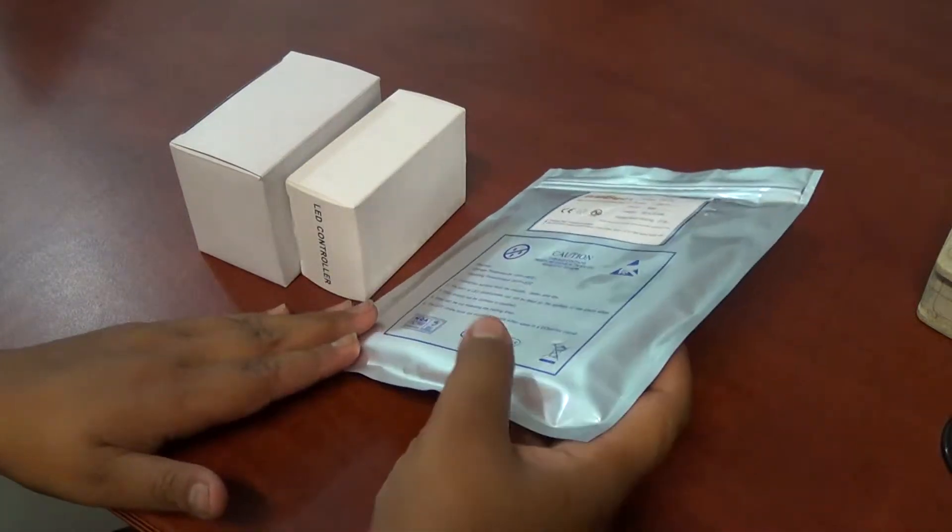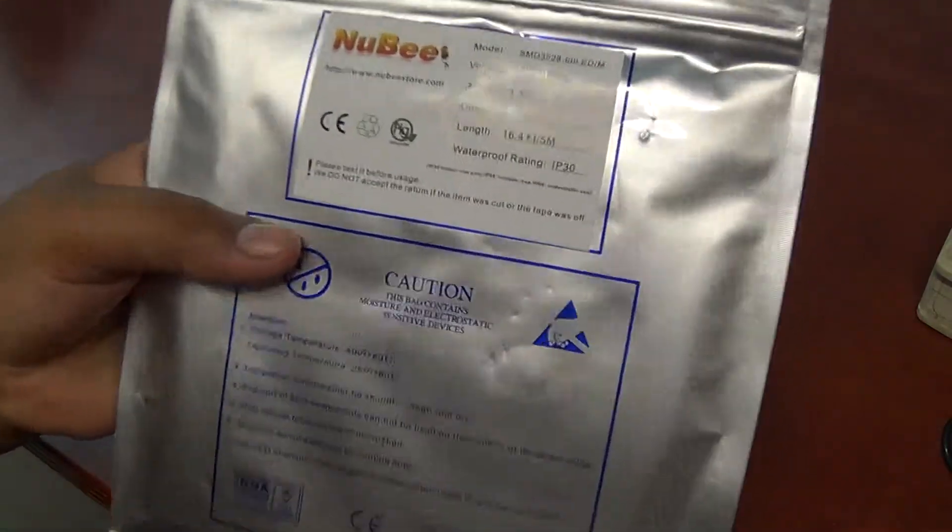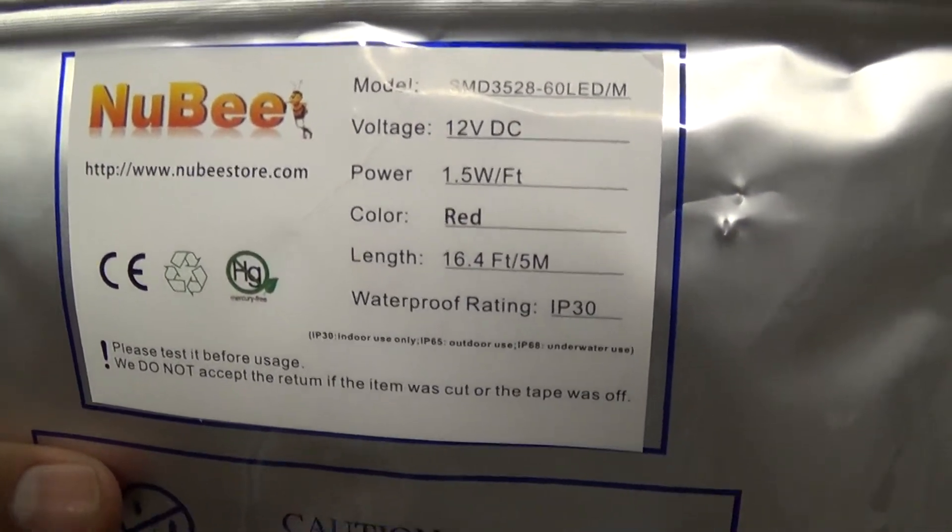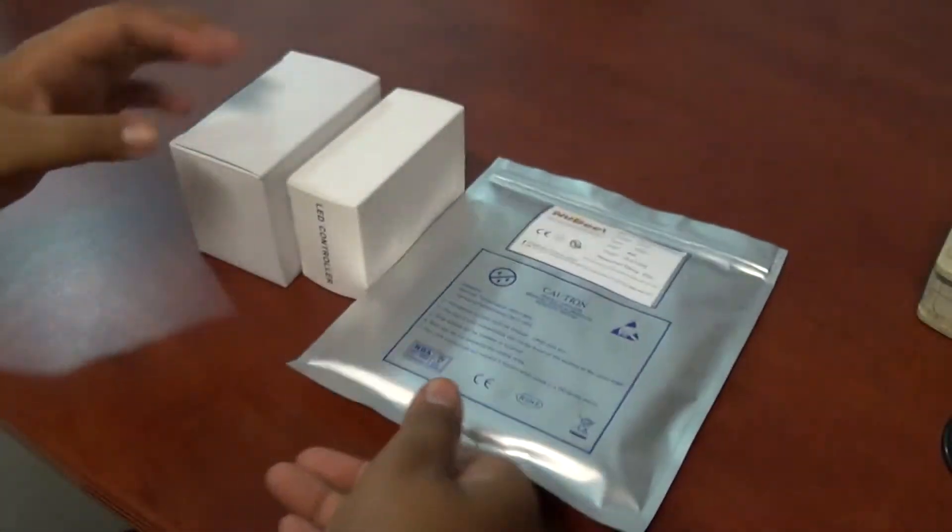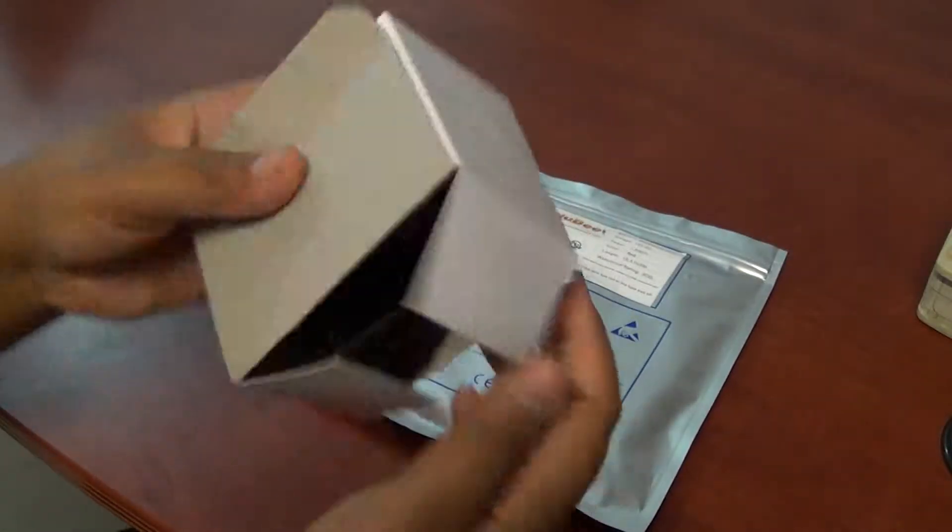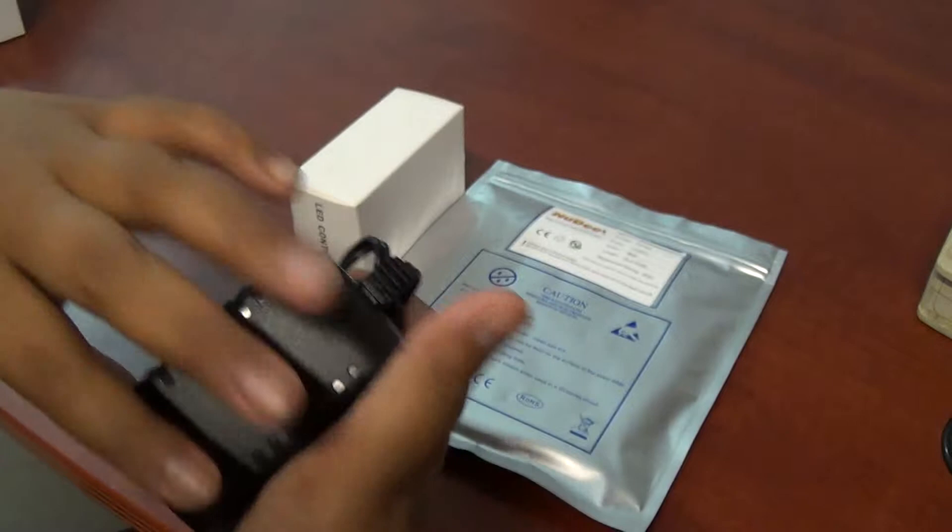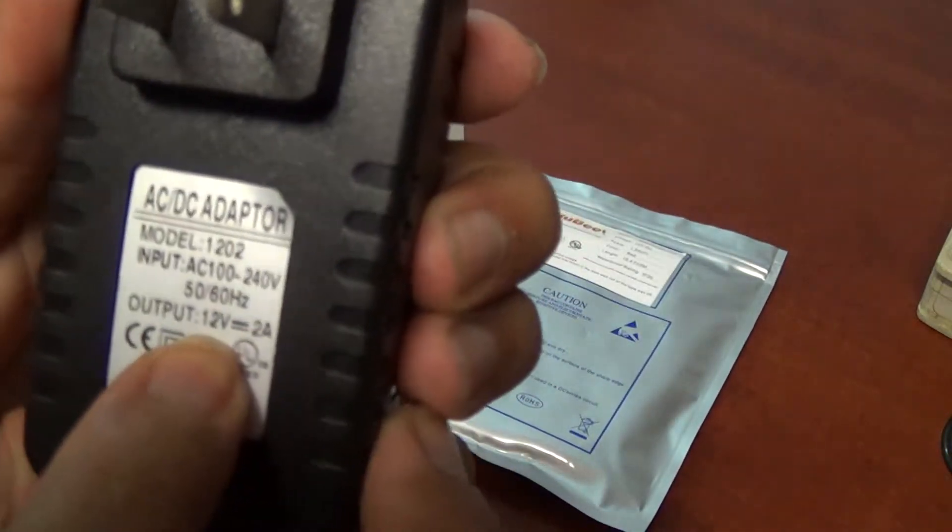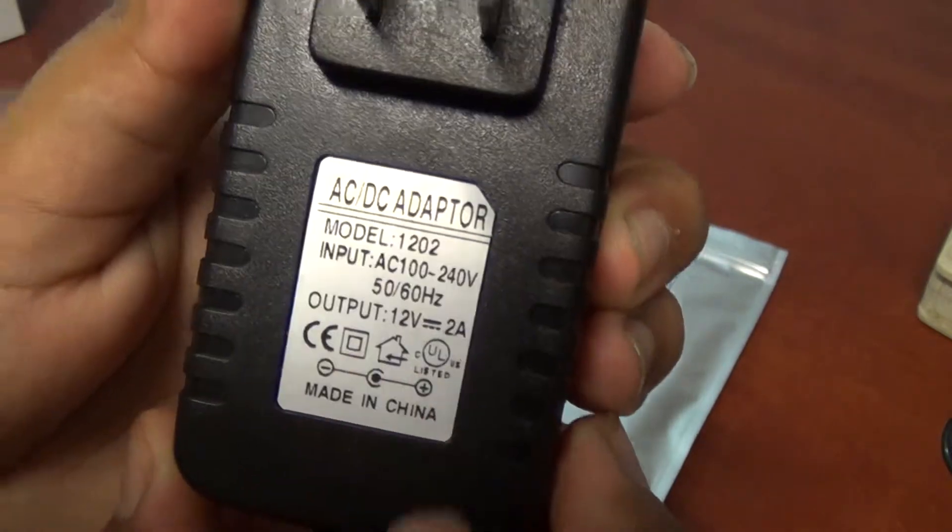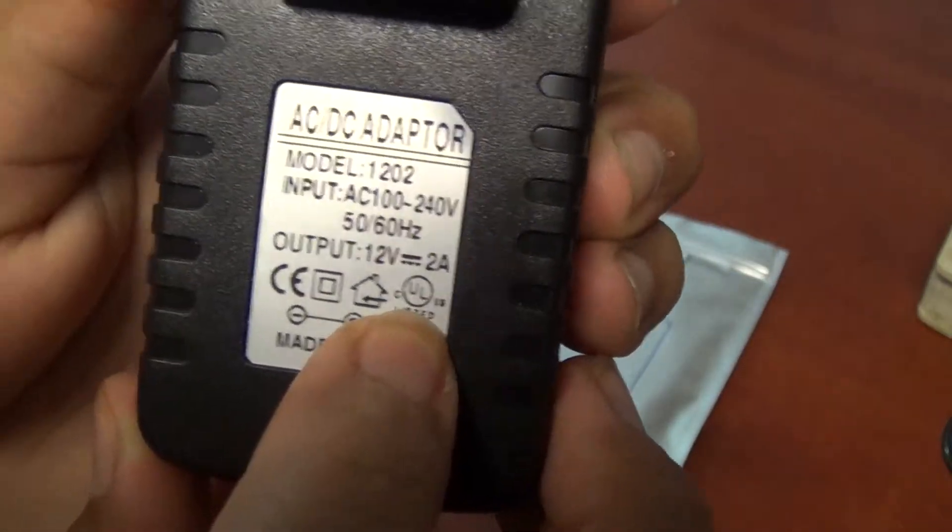Here we have today a Newbie 3528 non-waterproof color red 300 unit LED strip lights. We have here your LED power supply. It's 12 volts, 2 ampere, which is a total of 24 watts. It's UL approved.